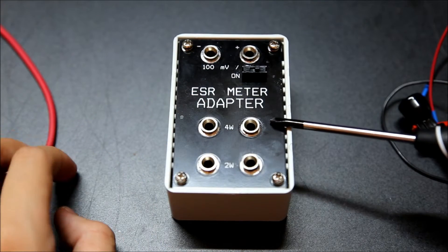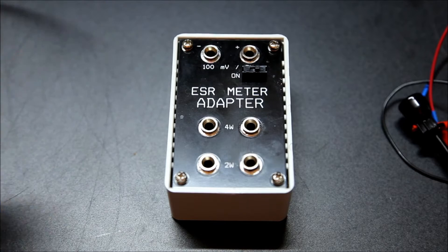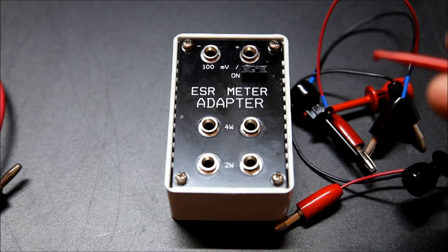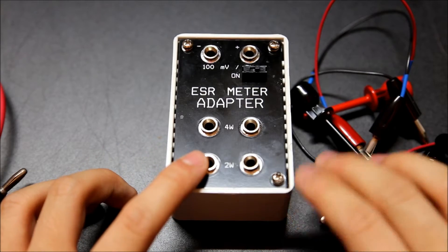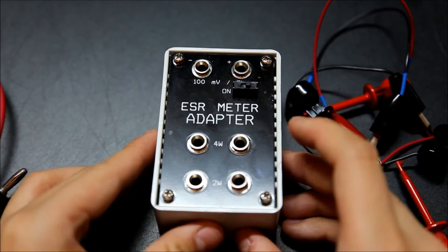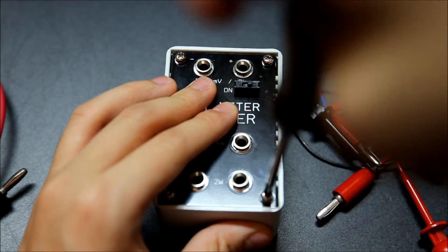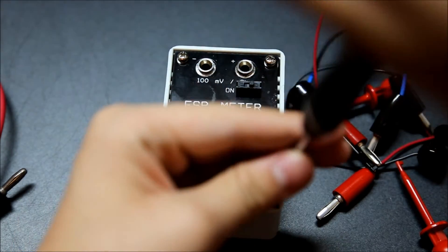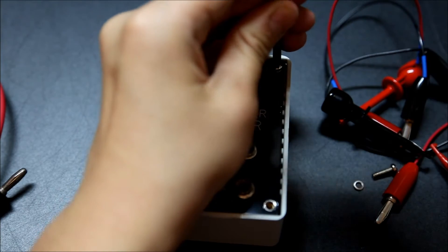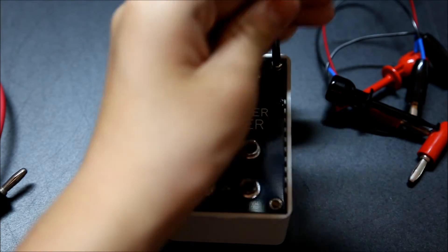So it's a convenient little box that allows you to measure ESR with your standard multimeter. First of all, let's take a look at what I was sent. I was sent a pair of banana plugs and these little spring hooks. This does have support for two-wire and four-wire measurements, and it outputs 100 millivolts per ohm of ESR measured. So let's open it up and take a look at what's inside.